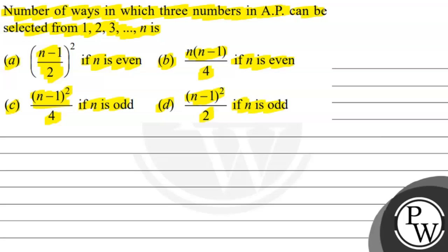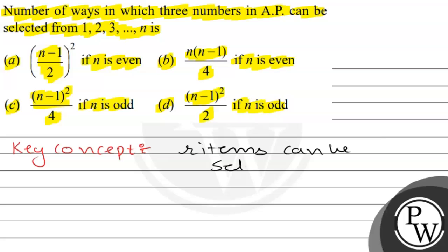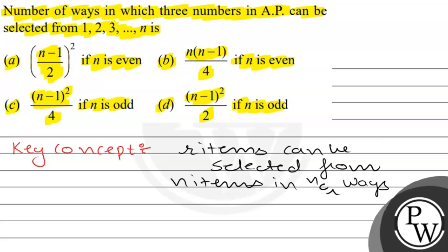So we have to find the number of ways in which three terms can be selected from 1, 2, 3 up to n. Firstly, I will tell you the concept. We have implemented n choose r ways in which three terms depend on n.